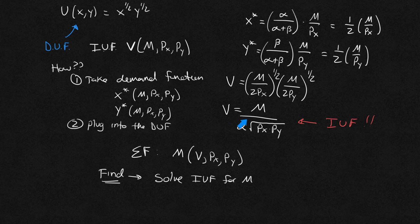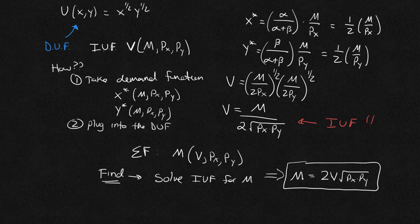So I'm just going to multiply both sides of my indirect utility function by 2 square roots Px, Py. So what is this going to get me? This is going to say M is equal to 2V square roots Px times Py. And that is your expenditure function, and we have my indirect utility function. So this one is my expenditure function.